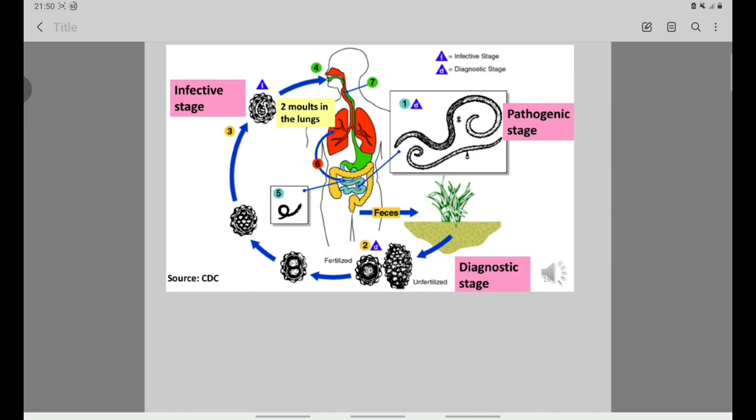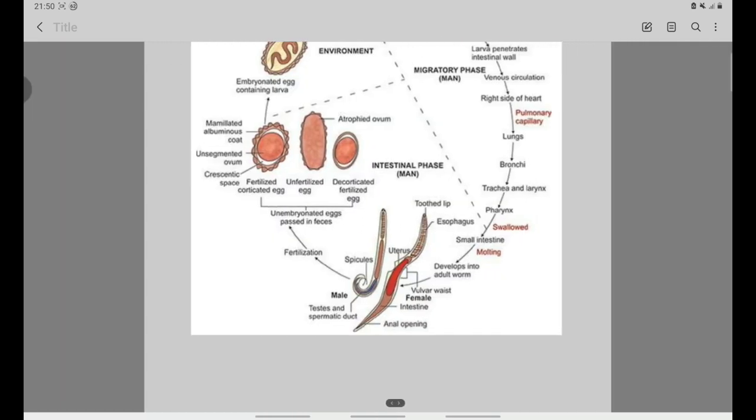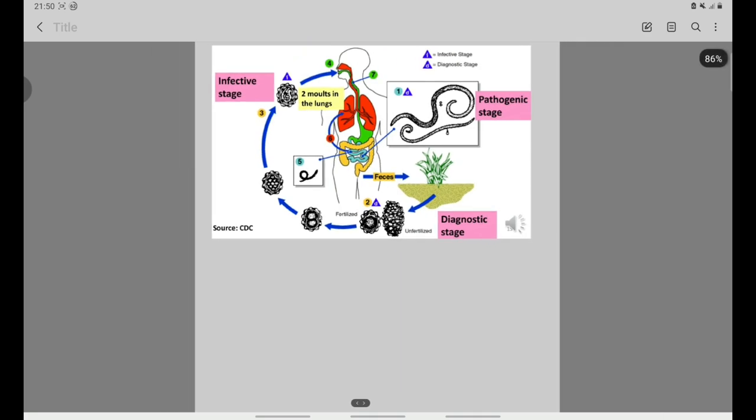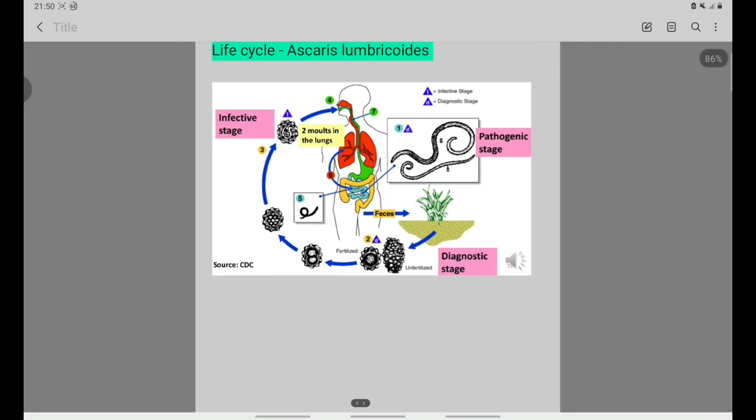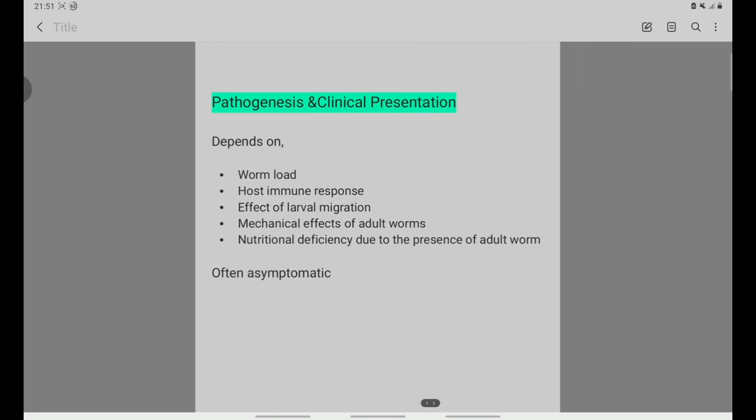In the lungs, larvae penetrate lung tissues, reach the bronchi and trachea, get coughed up and swallowed back to the small intestine. This is the intestinal phase where they mature to adult worms, the pathogenic stage.